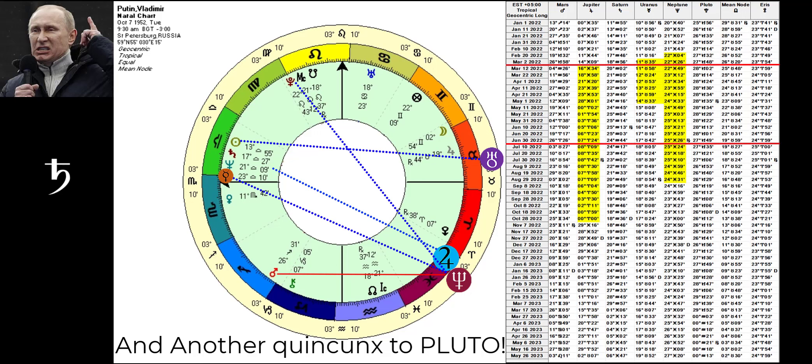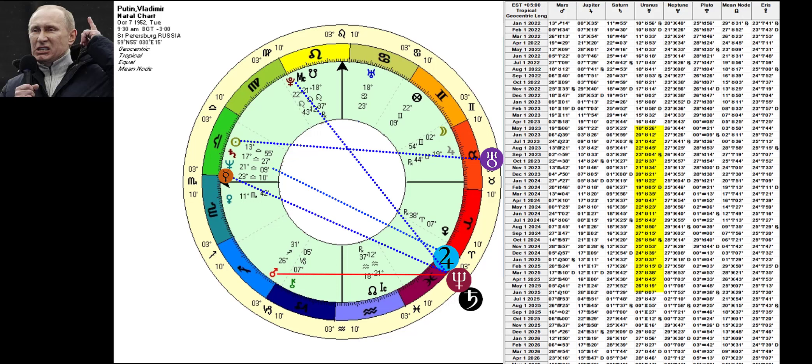Other quincunx action: when Saturn enters Pisces next year, it will then be poised to run through those Libra planets by quincunx during 23, 24, and parts of 25. Precisely the same thing that Uranus is doing from Taurus as well, meaning lots of quincunx action in the future.